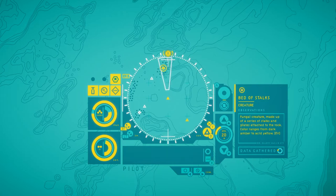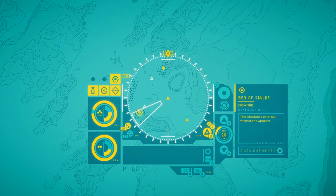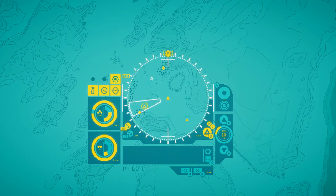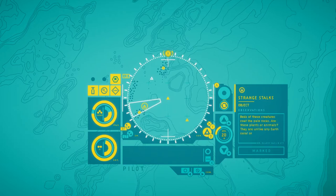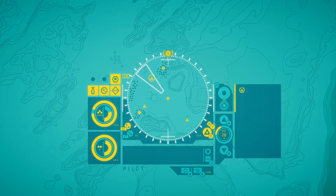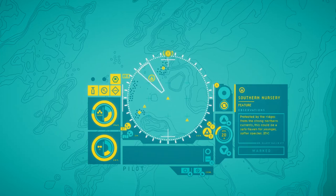Welcome back to my Subnautica playthrough! A bed of stalks. Made of layers of chitin. The beds of these creatures coat the Pale Rocks. These plants are animals. They're unlike any earth coral or sponge. Fun fact that everyone already knows: Coral is an animal, not a plant. Protected by ridges from strong northern currents, this could be a safe haven for younger, softer species.